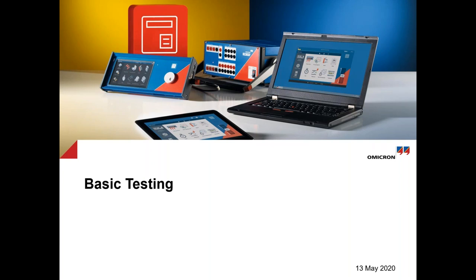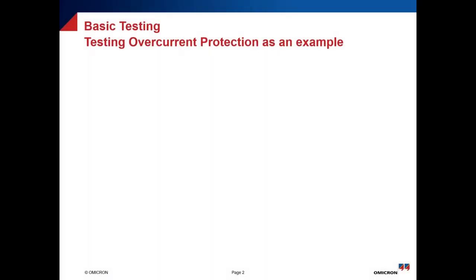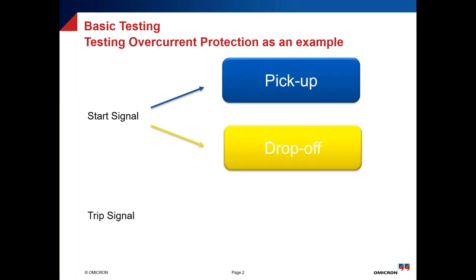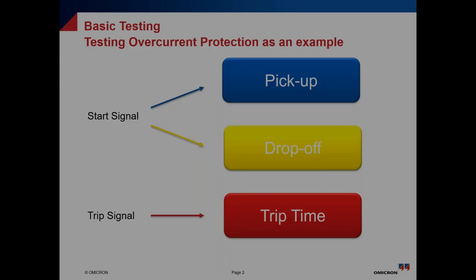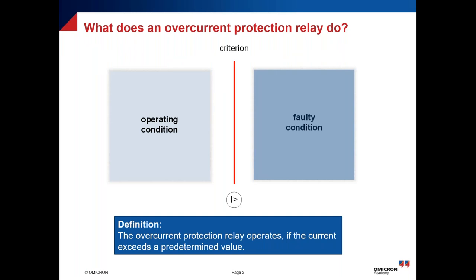What does basic testing mean? Here I give an example for testing overcurrent protection using basic testing methods. We need to test the pickup signal, which is a backup signal. We need to apply the test for getting the pickup value and the dropout. We need to increase the current gradually until getting the pickup, then decrease the current gradually until getting the dropout. This kind of checking the sensitivity of the protection relay is very basic and very essential for testing any protection relay based on the protection element.